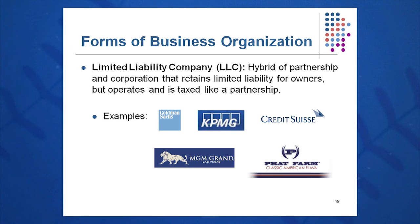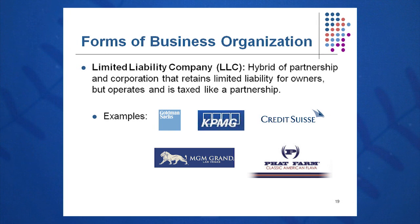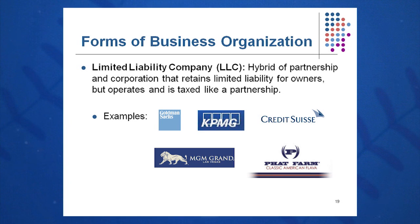Other new and evolving forms of business organization include the Limited Liability Company, or LLC, which blends attributes of the corporation and the partnership. It has the limited liability of a corporation and the taxation advantage of a partnership. One key disadvantage of a regular corporation is double taxation: pre-tax income is taxed once at the corporate level, and then if dividends are paid, the shareholder is taxed again. The LLC eliminates that and gives you the tax advantage of a partnership.